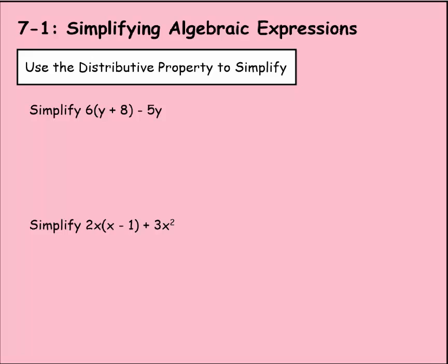Now we're going to be using the distributive property to simplify. It says simplify 6(y + 8) - 5y. So we've worked with distributive property before, and we know to distribute that 6 to both the y and the 8 by multiplication. So 6 times y is 6y. Drop that plus sign down. 6 times 8 is 48.